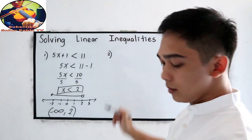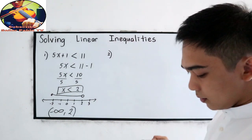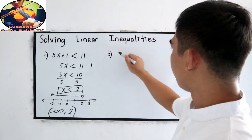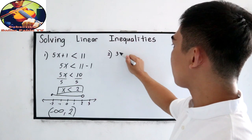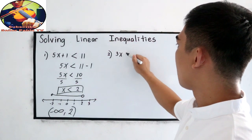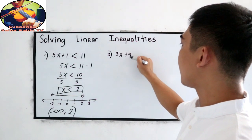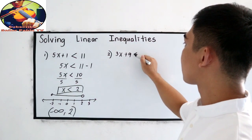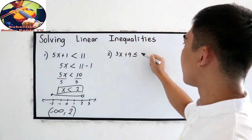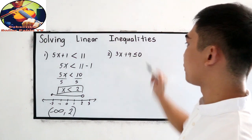Now let's try number 2: 3x plus 9 is less than or equal to 0.